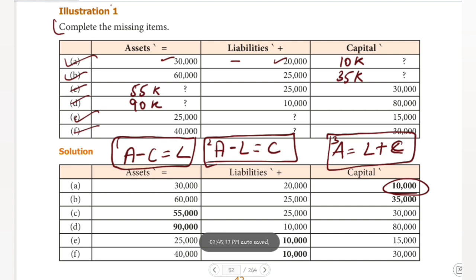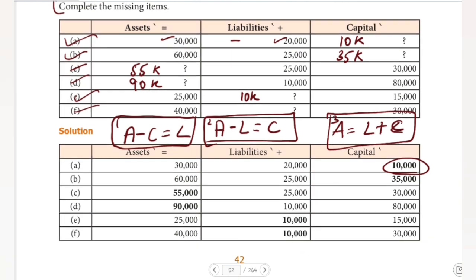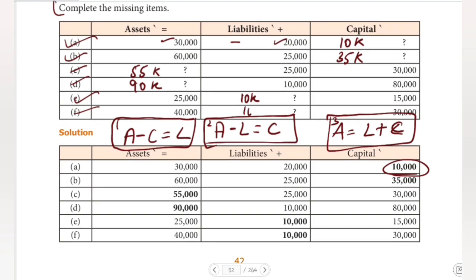For the fifth and sixth equations, we have assets and capital given, so we need to find liabilities. Liabilities equal assets minus capital. Fifth equation: 25,000 minus 15,000 equals 10,000. Sixth equation: assets minus capital — 40,000 minus 30,000 — equals 10,000.